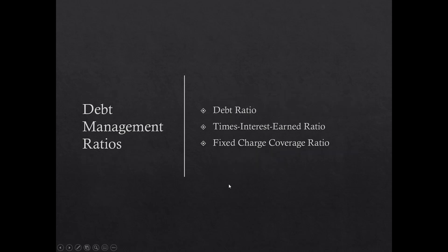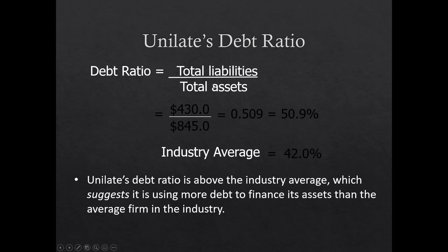Debt management ratios — the debt ratio, times interest earned, and fixed charge coverage — analyze a firm's ability to repay its debts. The debt ratio is total liabilities divided by total assets: $430 million / $845 million = 50.9%. The industry average is 42%, so Unilate's debt ratio is above industry average, indicating it has borrowed more than other firms in the industry and is using more debt to finance its assets.